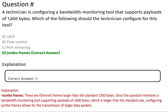The next question is: a technician is configuring a bandwidth monitoring tool that supports payloads of 1600 bytes. Which of the following should the technician configure for this tool? Option A: LACP, Option B: flow control, Option C: port mirroring, Option D: jumbo frames. The correct answer is Option D, jumbo frames.